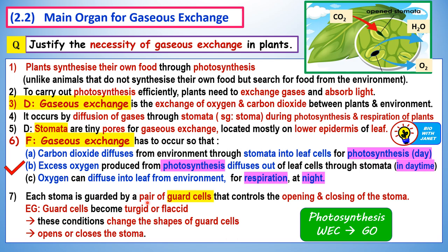Each stoma is guarded by a pair of guard cells that control the opening and closing of the stoma by becoming turgid or flaccid. Turgid means full of water; flaccid means the guard cells lack water. When the guard cells are turgid or flaccid, the stoma will open or close accordingly. Let's find out how guard cells open and close the stoma.